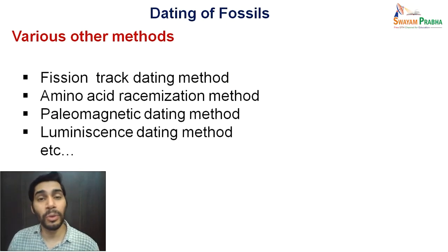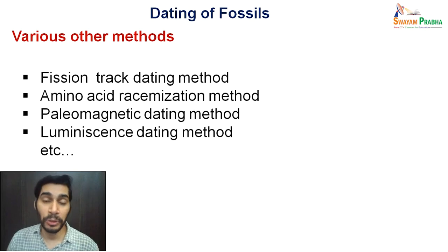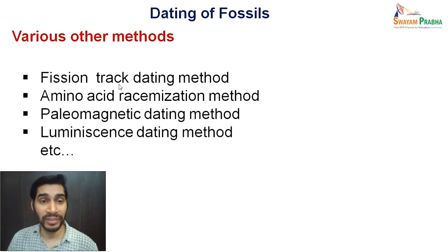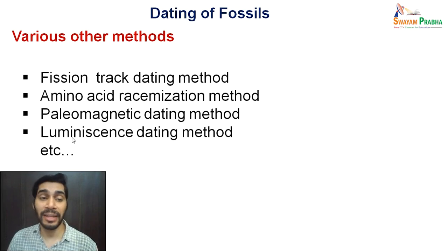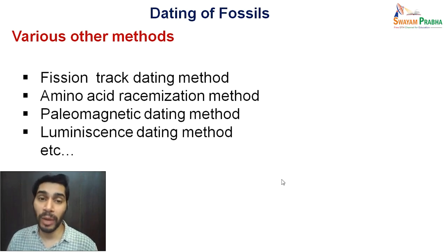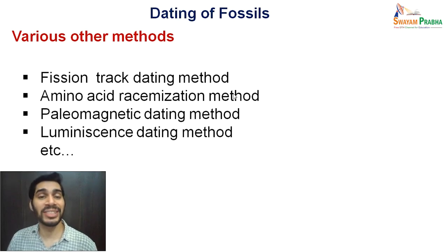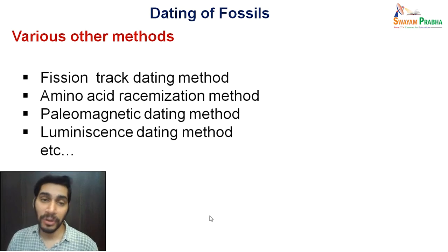These are not the only methods of dating fossils. Besides relative and absolute methods, there are other methods such as fission track dating, amino acid racemization, paleomagnetic dating, and luminescence dating. Depending on the requirement and technology, different methods can be used — the dating methods are not limited to what we just discussed.